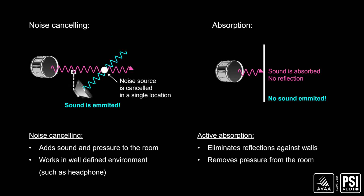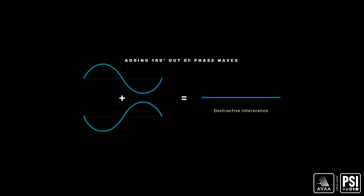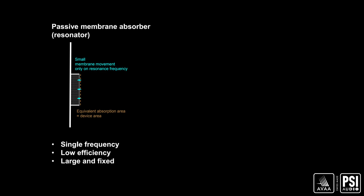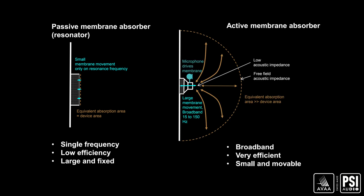Active absorption is not noise cancelling. Noise cancelling emits a sound that cancels out another sound at one location — something at equal amplitude but out of phase with the sound you want to cancel. Absorption is a membrane that moves reactively to the pressure it receives. Being active, it can move further, pulling pressure from further away, and it can move on any frequency without having to be tuned.